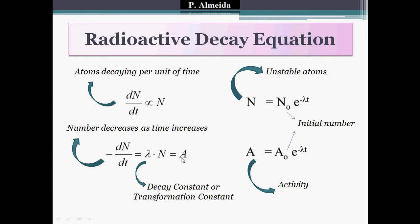Now, why is all of this equal to minus ΔN over ΔT? Because the number — the activity, the decay rate — decreases as the time increases. If I have a sample with a higher number of parent nuclei, I'm going to have a more active sample, because I have more atoms decaying per unit of time. So I need a minus in there, because as the unstable atoms decay, my activity decreases.